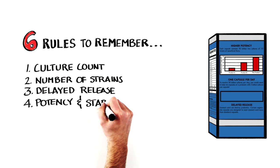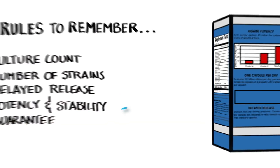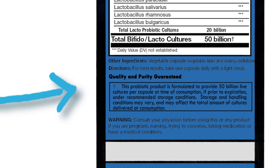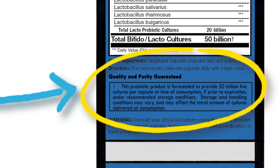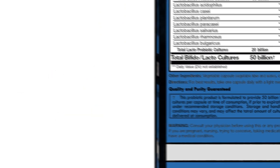Fourth is a potency and stability guarantee. If there isn't one, you may not be getting what you pay for. Look for one that guarantees potency through to the end of the expiration date, not just at the time of manufacture. Look closely at the label.